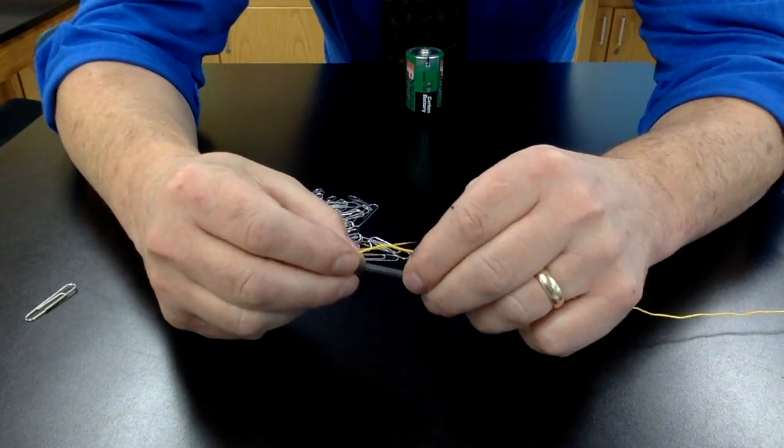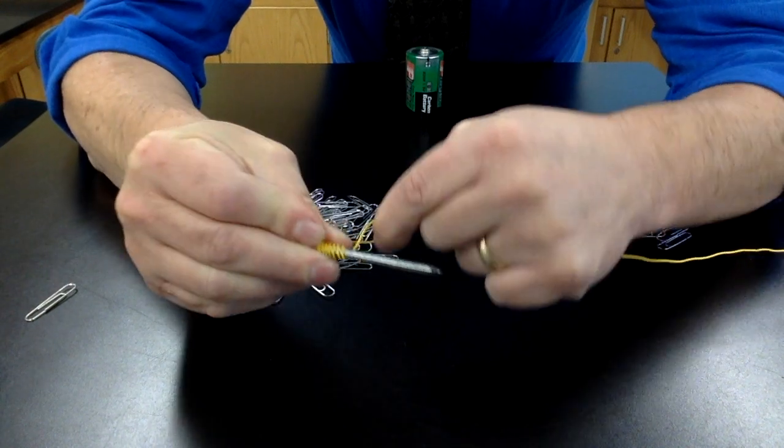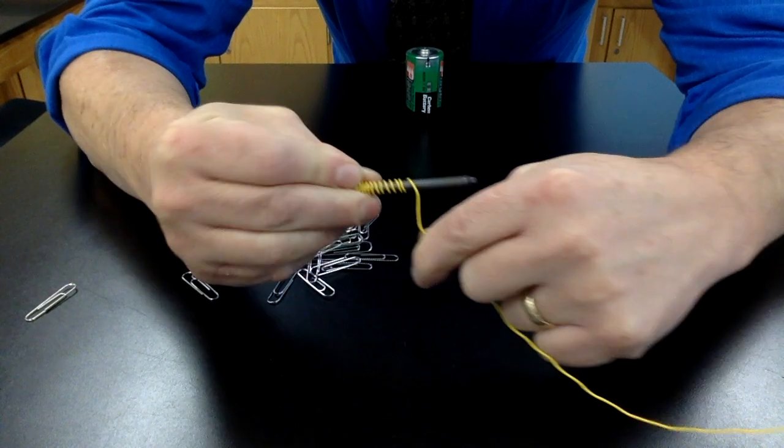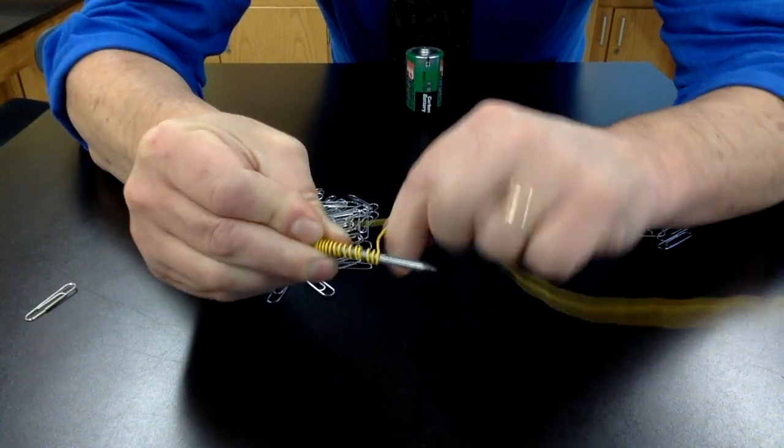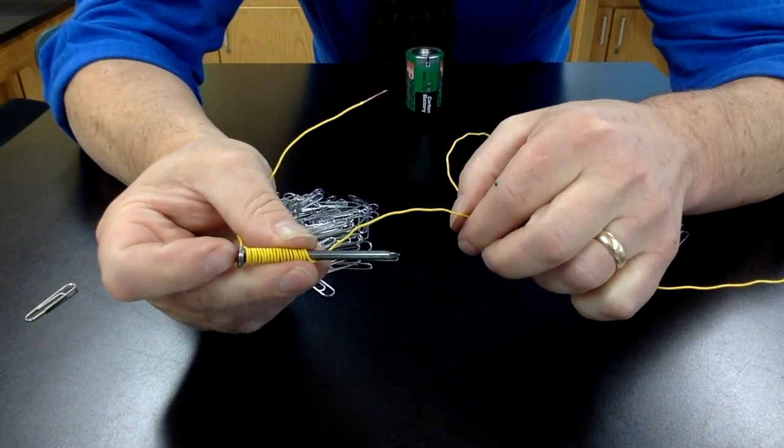Then, we're going to repeat that, only this time we're going to wrap it twenty times. So, two, three, four, five, six, seven, eight, nine, ten. Now, we've got it twenty times around that nail.